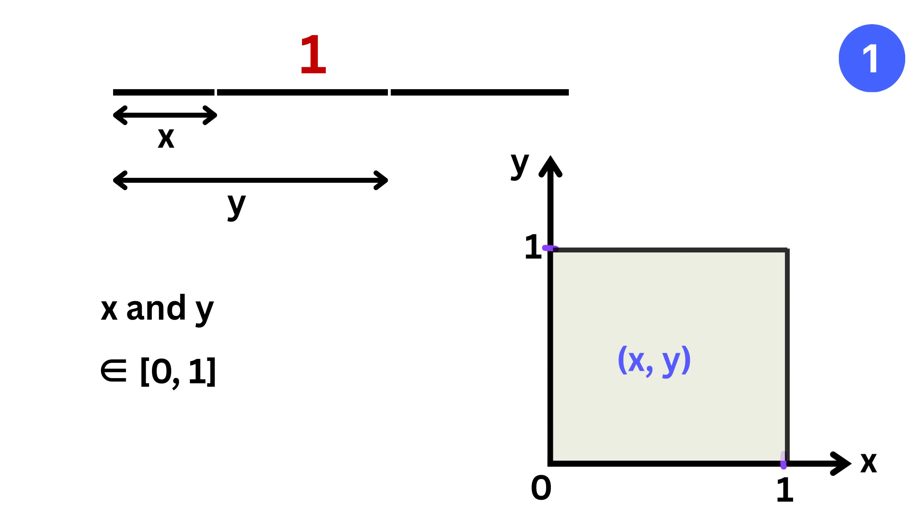Therefore, the pair (x, y) represents a random point inside a unit square, where each coordinate corresponds to one of the break positions along the stick. This is our entire sample space.